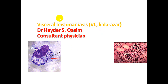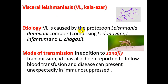What is visceral leishmaniasis? It is a protozoal disease caused by the Leishmania donovani complex, comprising Leishmania donovani, infantum, and chagasi. This is a parasitic infection. Mode of transmission includes the sandfly, as seen in the picture. Transmission has also been reported following blood transfusion, and the disease can present unexpectedly in immunocompromised patients.